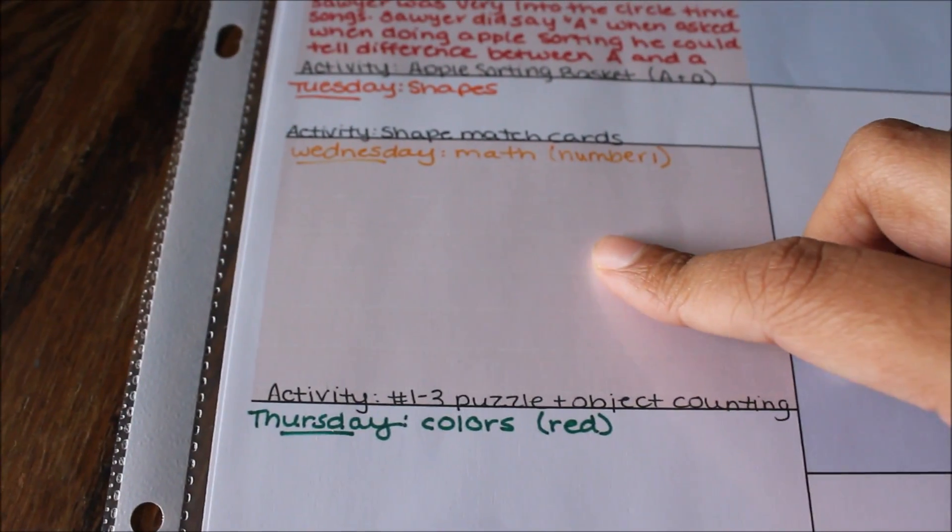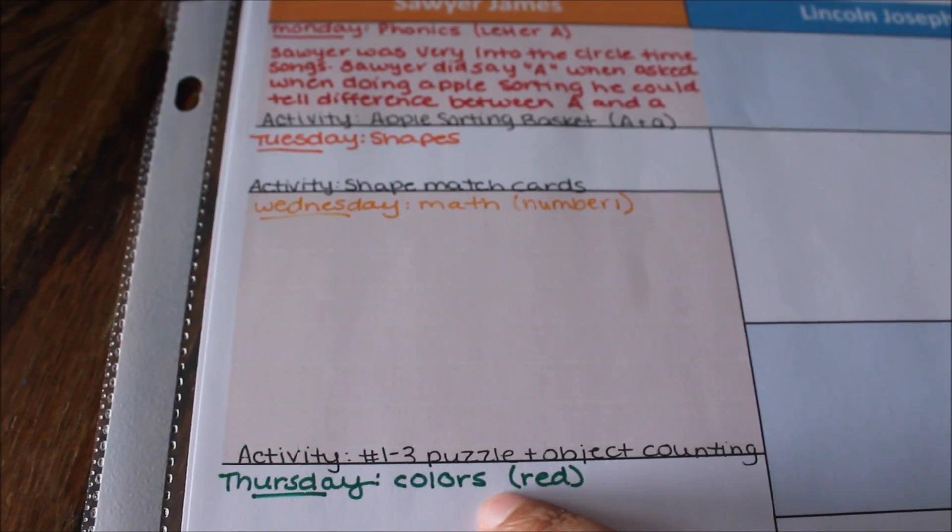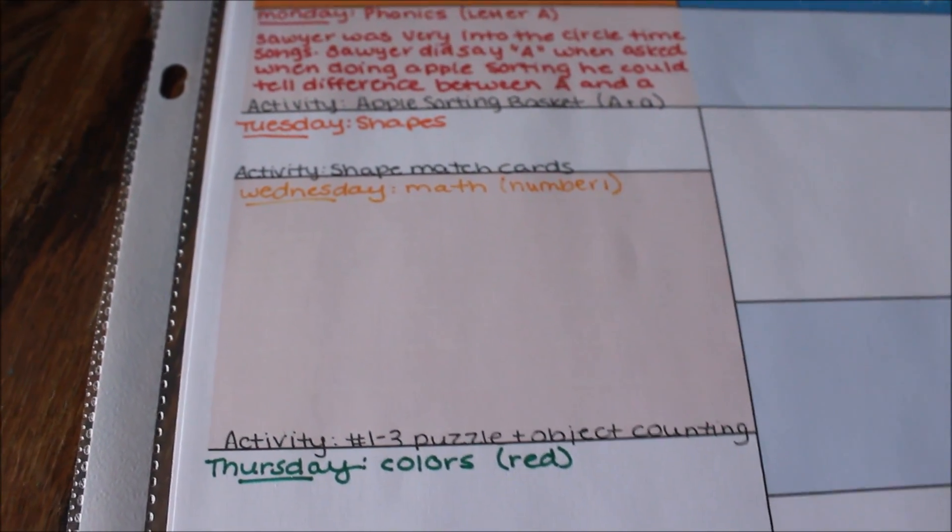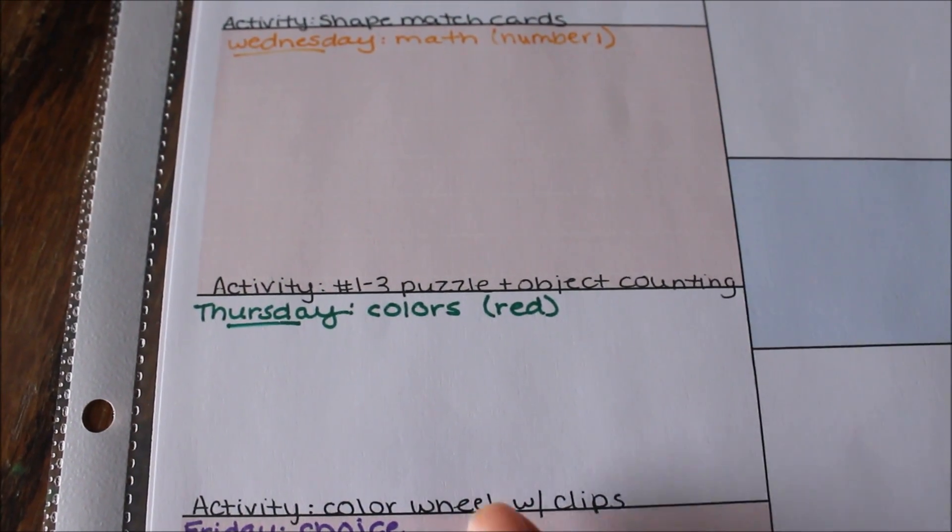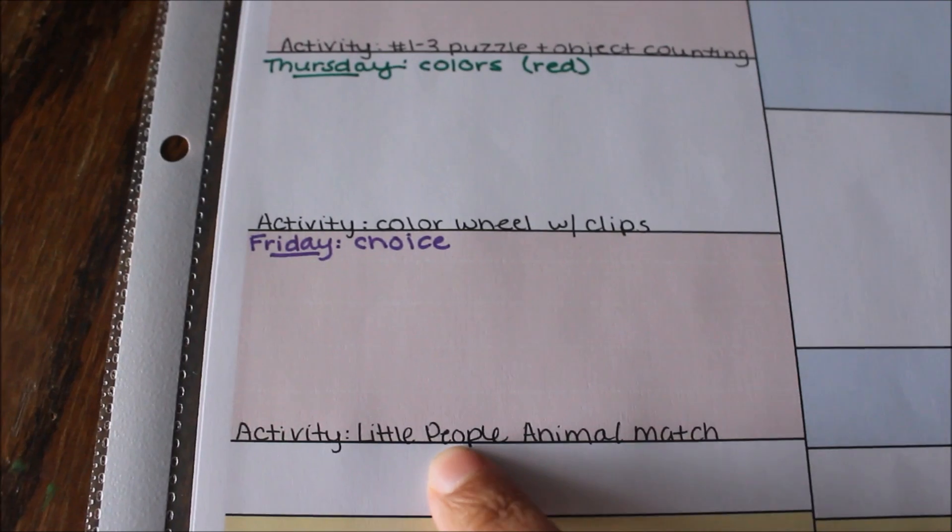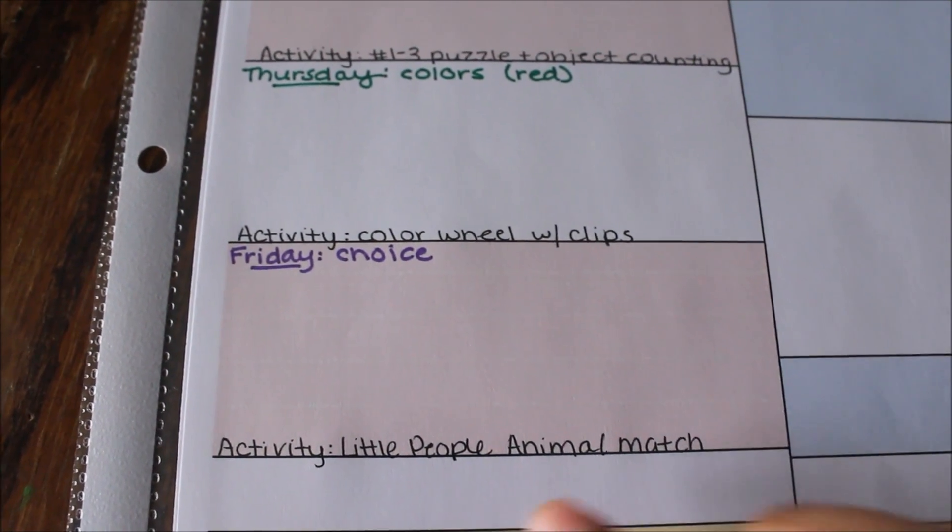Wednesday is math, we're doing the number one this week and we're doing a number one through three puzzle and object counting. Thursday is colors and we're doing the color red and a color wheel with clips activity. And then Friday is choice and I chose to do a little people animal match.